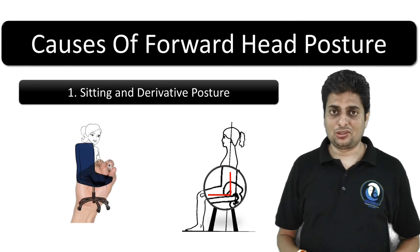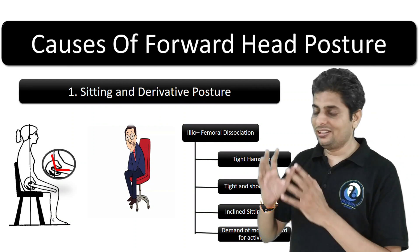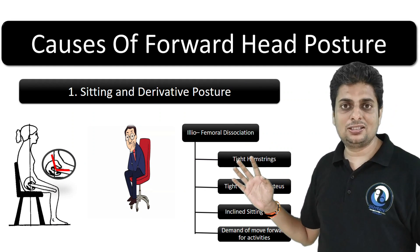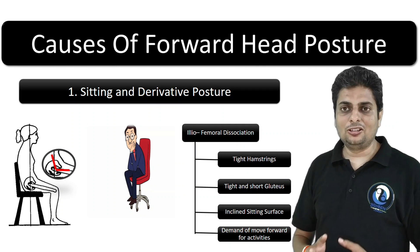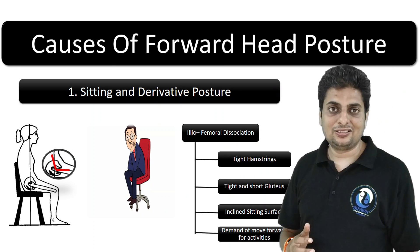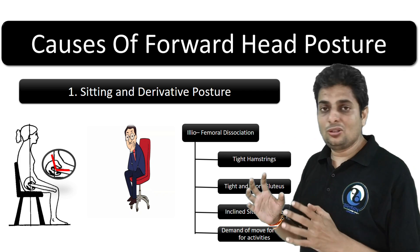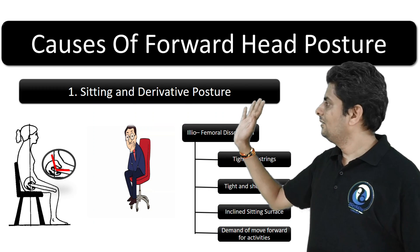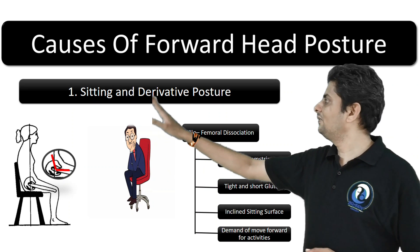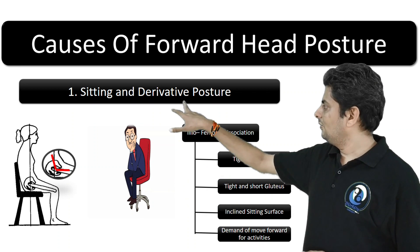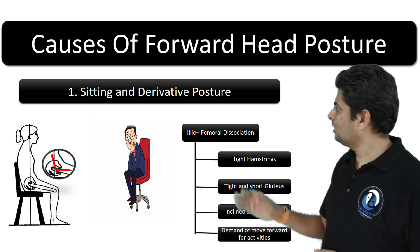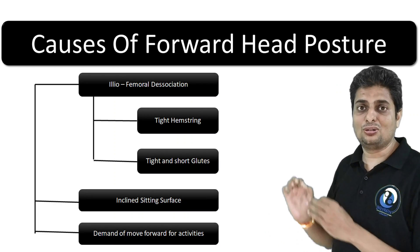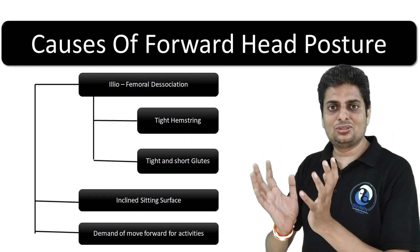The next category is sitting and derivative postures, which are increasingly common given how much time people spend sitting. The first factor is femoral dissociation — or the freedom between the ilium and femur. If hip flexion is less than 90 degrees, sitting pushes the COG posteriorly, requiring thoracic flexion and forward head to compensate. The two most common responsible factors are tight hamstrings and tight hip flexors.